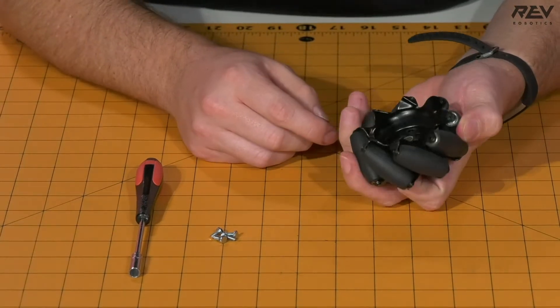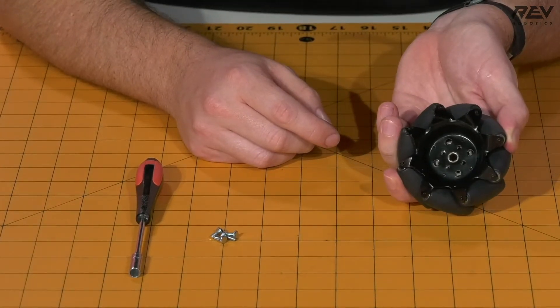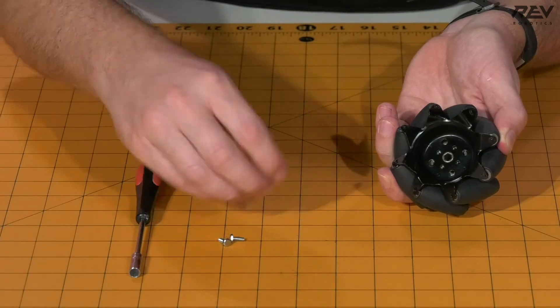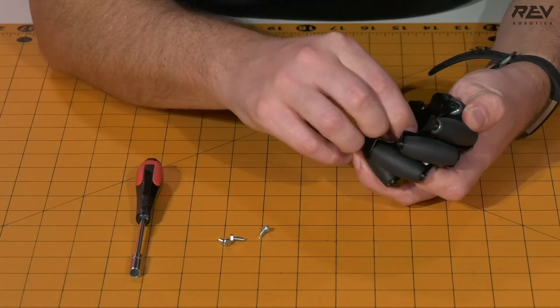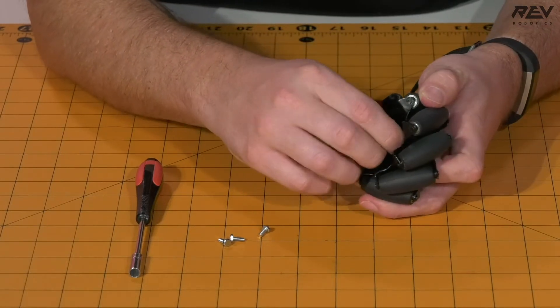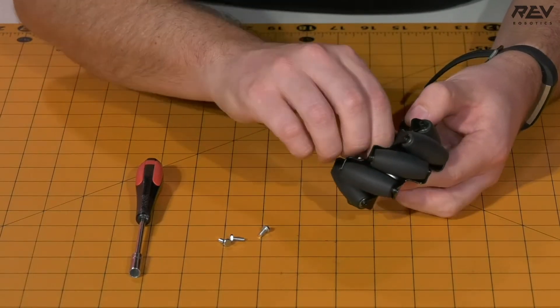Once those are aligned you're going to want to flip the wheel over to the side where the hub is not visible and then take your hex cap screw and start finger tightening it into the universal hex hub.